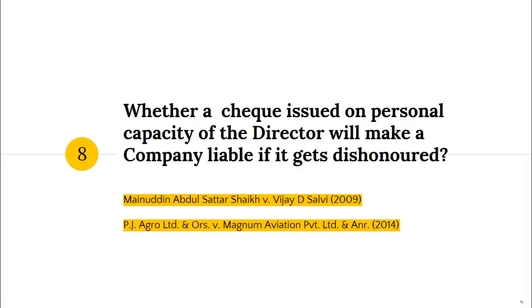Next: whether a cheque issued in the personal capacity of a director will make the company liable if it gets dishonoured. Two case laws address this: Munuddin Abdul Satar Sheikh versus Vijay Dhi Salvi, 2009, and PJ Agro Limited and Others versus Magnum Aviation Private Limited and Others, 2014. Both held that if a director or employee issues a cheque in their personal capacity, the company will not be liable if that cheque gets dishonoured.